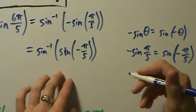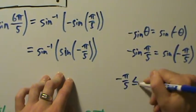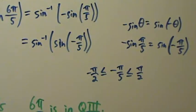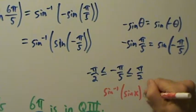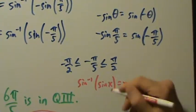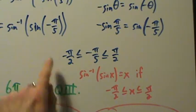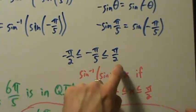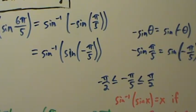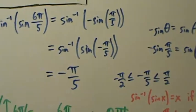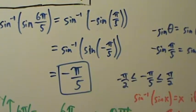And how does that help us? Notice that negative π over 5 is actually between negative π over 2 and positive π over 2. That's significant — now we can actually cancel, because the rule says inverse sine of sine of x equals x if negative π over 2 is less than or equal to x is less than or equal to π over 2. This is true for negative π over 5. So we can cancel, and we get negative π over 5. That is the answer: inverse sine of sine of 6π over 5 equals negative π over 5.